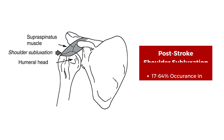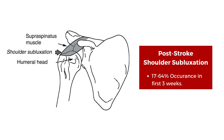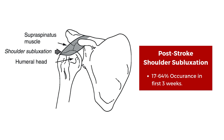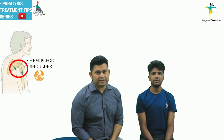Hemiplegic shoulder pain is one of the most common complications seen in post-stroke patients, and its occurrence ranges between 17 to 64 percent within the first three weeks from the onset of hemiplegia.